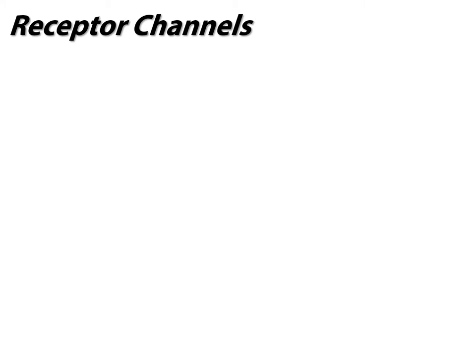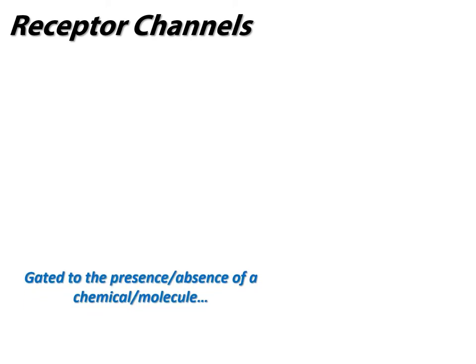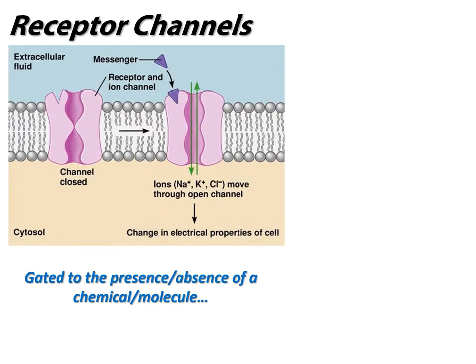Our first category is gated receptor channels, which we've already discussed a little bit in chapter 5. These channels are gated to the presence or absence of a chemical molecule. In this figure, we have a channel that is closed in the absence of some extracellular first message. Once the extracellular message arrives and binds appropriately, it changes configuration and opens, allowing some kind of ion or molecule to move through. Channels have specificity that is relatively non-specific compared to carriers - usually based on size or charge.